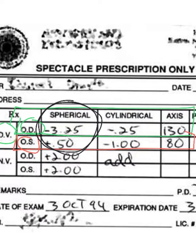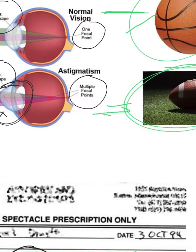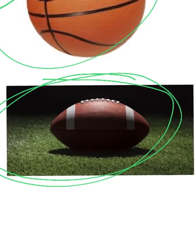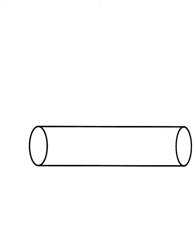The cylinder number represents the amount of astigmatism. In astigmatism, your cornea looks like a football, and a football looks like a cylinder. That's the essence of astigmatism — the cornea is oval-shaped or cylinder-shaped.